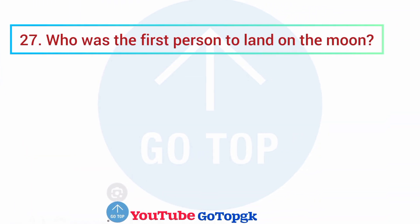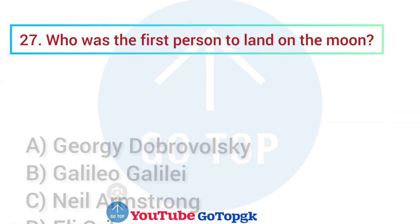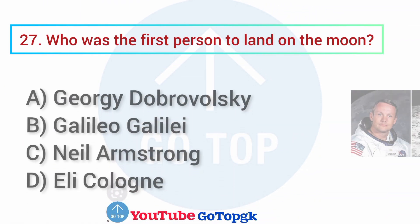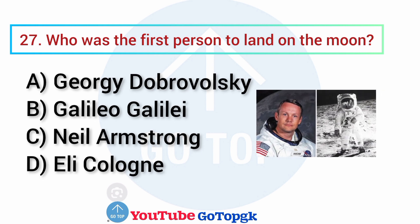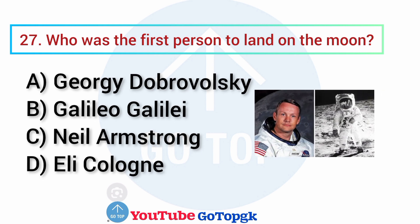Question No. 27. Who was the first person to land on the moon? Your correct answer is option C: Neil Armstrong was the first person to land on the moon.